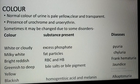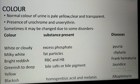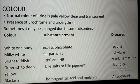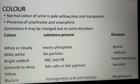Bright reddish urine is called frank hematuria, meaning RBCs or hemoglobin are present. Greenish to deep yellow urine is seen in jaundice, meaning bile salts or bile pigments are present. Blackish color urine is called alkaptonuria, meaning homogentisic acid and melanin are present in the urine.